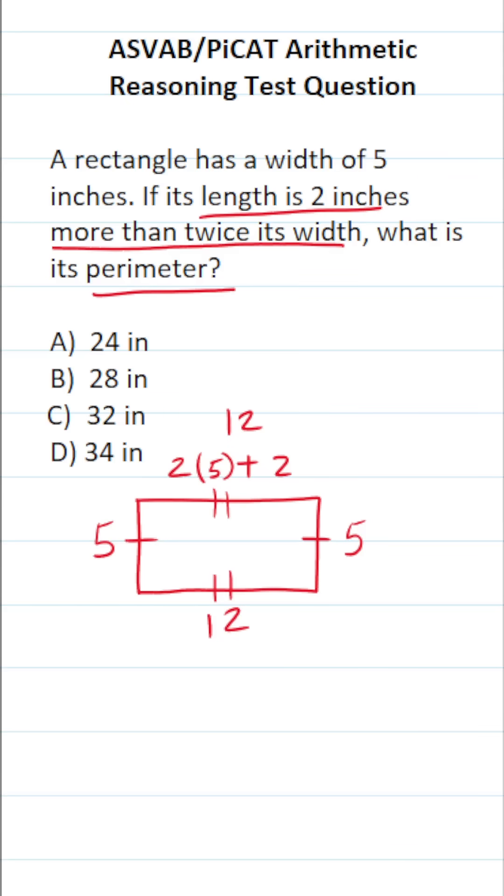Now we have to find the perimeter of this rectangle. How do you find the perimeter of a rectangle? You simply add up all of its sides. So it's going to be 5 plus 12 plus 5 plus 12.